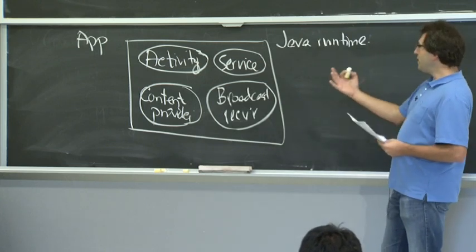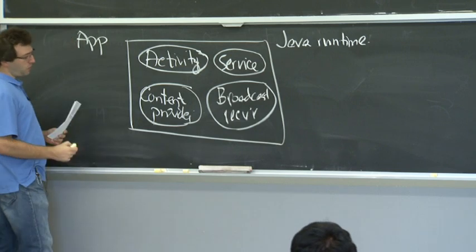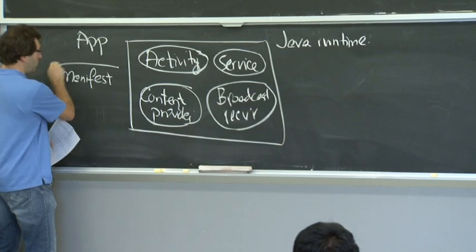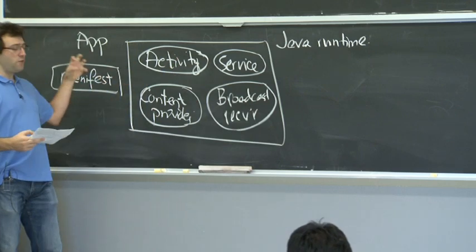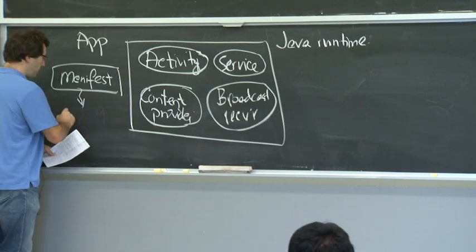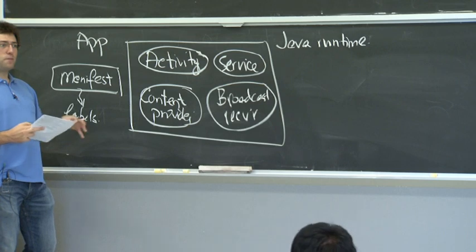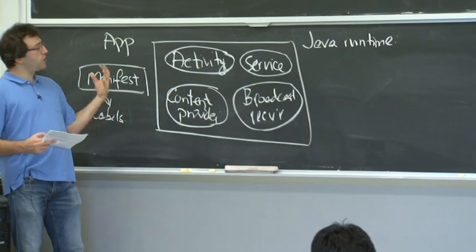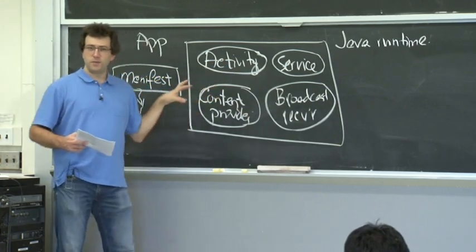Something that ships with an application is what's called a manifest — code that the developer writes or compiles. There's also this manifest that sits on the side, which is an XML file that describes all the components and how other parts of the system should interact with this application. In particular, the manifest talks about labels that define both the privileges of this application in terms of what it should be allowed to do, as well as the restrictions on who else should be able to interact with the different components.